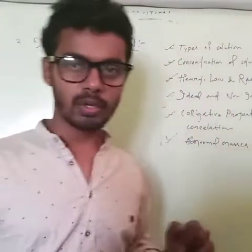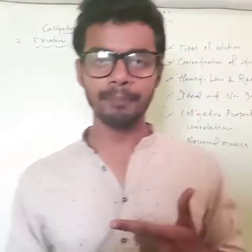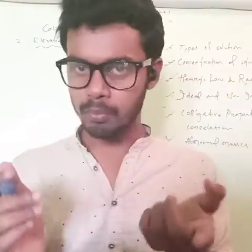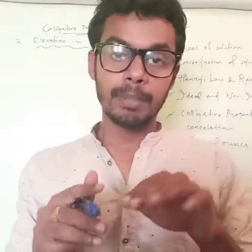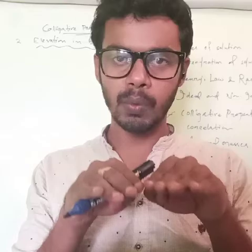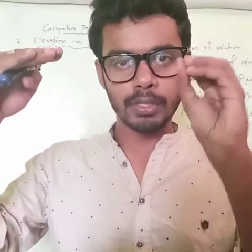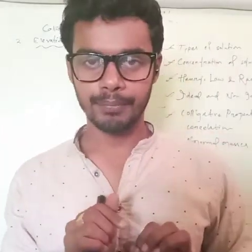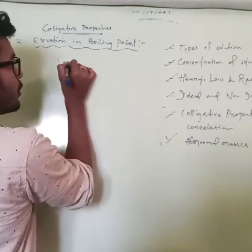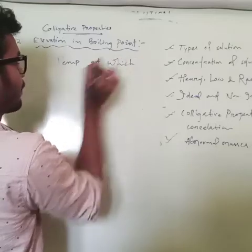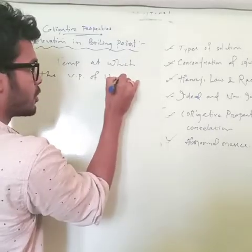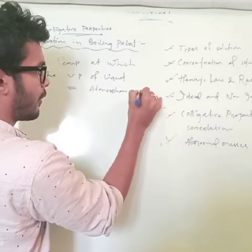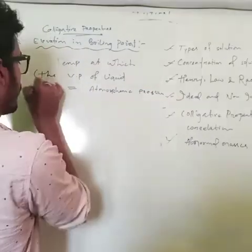Next is elevation in boiling point. This is also a colligative property. Before this, what is boiling point? Boiling point is the temperature at which a liquid boils. But now the definition will change: it is the temperature at which the vapor pressure of a liquid equals the atmospheric pressure, and the liquid starts to boil.